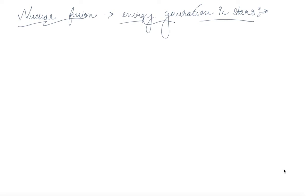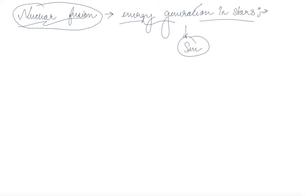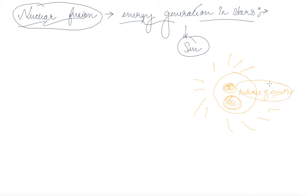Let's have a discussion on nuclear fusion. This particular reaction takes place in stars, for example the Sun. The energy of the Sun can be answered by understanding nuclear fusion. In the Sun, there are gases that fuse together with one another and form a nucleus of higher atomic mass, along with a release of energy. In this way, stars use the process of nuclear fusion.